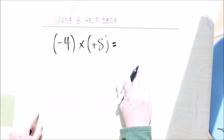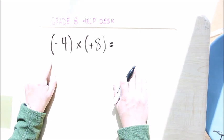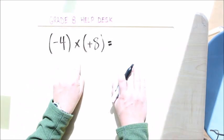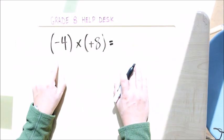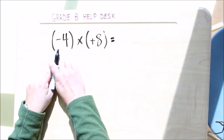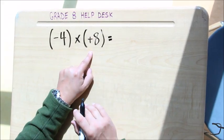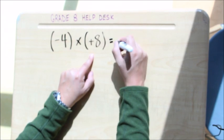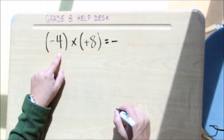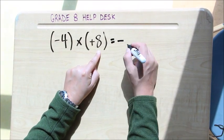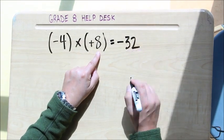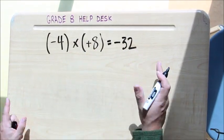I'm going to once again do this question, but I'm going to start off by just doing my number math up here first. So I have a negative times a positive, signs are different, so that means that the answer is going to be a negative. Four times eight is 32, and I've got my math done.